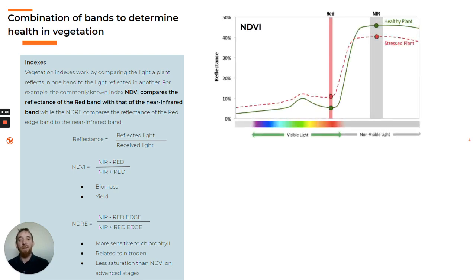On the first graph we can see the green curve, which is the spectral reflectance of most healthy plants. The red dotted line shows the spectral reflectance of a stressed plant. The NDVI index calculates the difference between the near-infrared band and the red band over the sum of both. This value will always be between 0 and 1, where 0 shows no biomass and 1 shows a healthy plant.